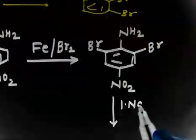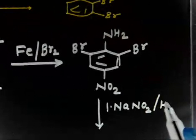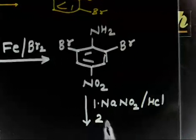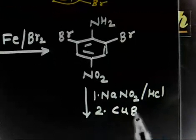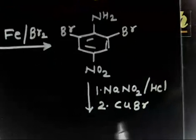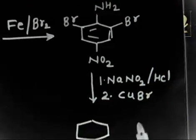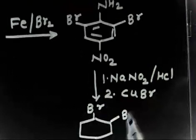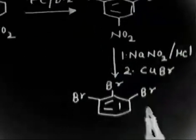Treating with NaNO2/HCl gives the diazonium cation. Then treating with CuBr — the copper salt of bromine — via the Sandmeyer reaction attaches a bromine at the position of the NH2 group. Now you have two bromines at ortho positions and one from the Sandmeyer reaction.